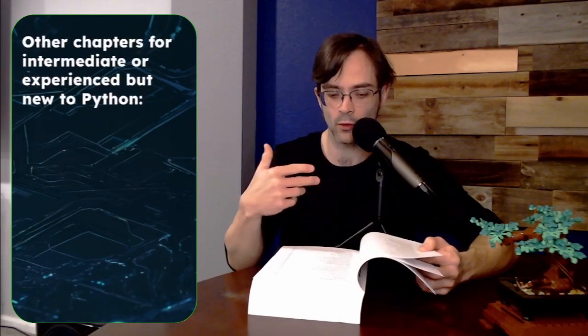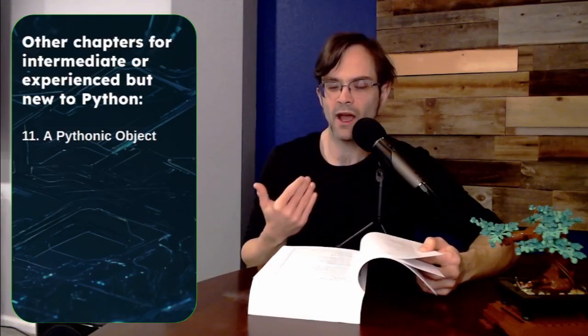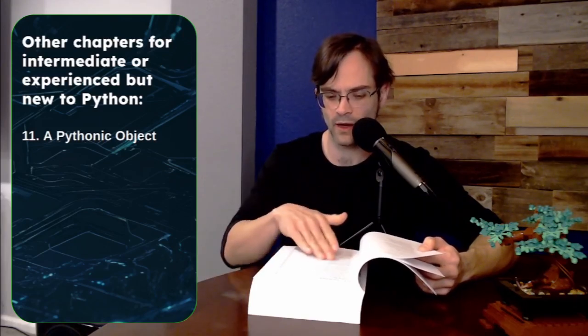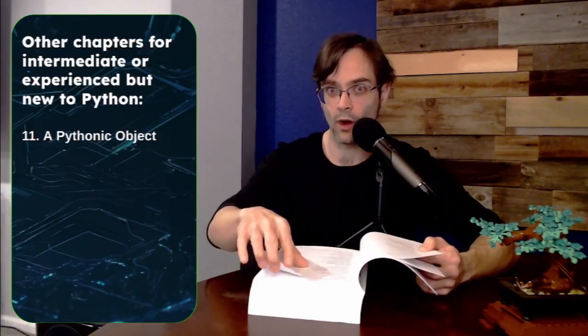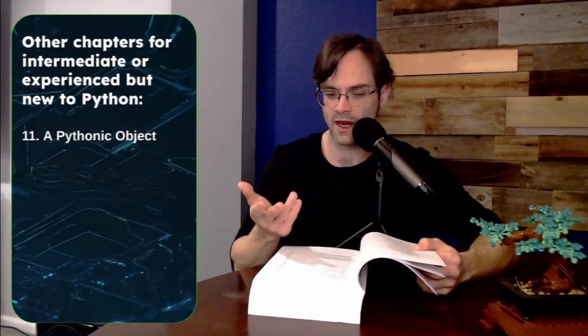But there's a few other chapters I would also recommend to people in that group. So I would say chapter 11. This really talks, it's called a Pythonic object, and it's about how you might make an object or a class that behaves in a very Pythonic way. And it's just an introduction. The rest of this part three covers that in more detail. And I don't necessarily think everybody's going to need all of part three. But I do think everyone should read chapter 11 because it's going to kind of clarify what Pythonic is and why we want objects to behave in this way and give a simple example of that.